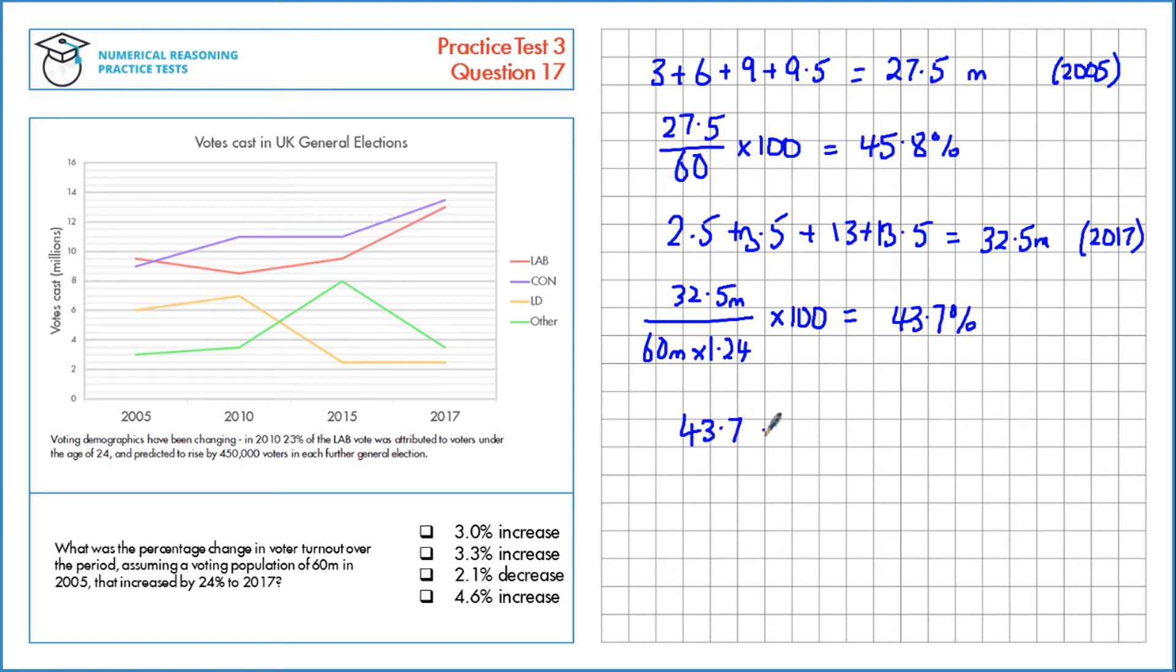so that's 43.7%. Take away the original number, 45.8%. Divide by the original, 45.8. And then, since we want a percentage, multiply by 100. That leaves us with 4.6% decrease, or in the calculator, this will come up as minus 4.6%, which means it's a decrease.